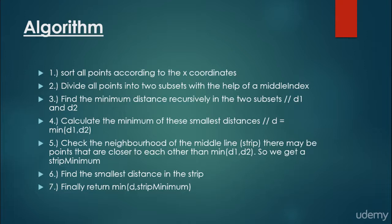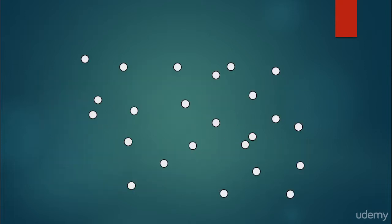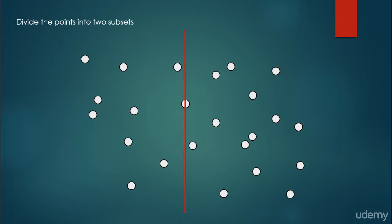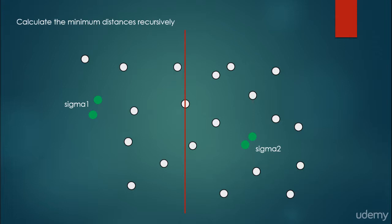In dynamic programming, subproblems are not independent of each other. So this is the algorithm. We are going to implement it, and I think during implementation it will be much clearer. We have a set of points in a two-dimensional plane, sort by x-coordinate, divide into two subsets recursively, calculate the middle node, and create the left and right subsets. We calculate the minimum distances recursively: sigma 1 is the distance between the closest pair in the left subset, and sigma 2 is the distance between the closest pair in the right subset.